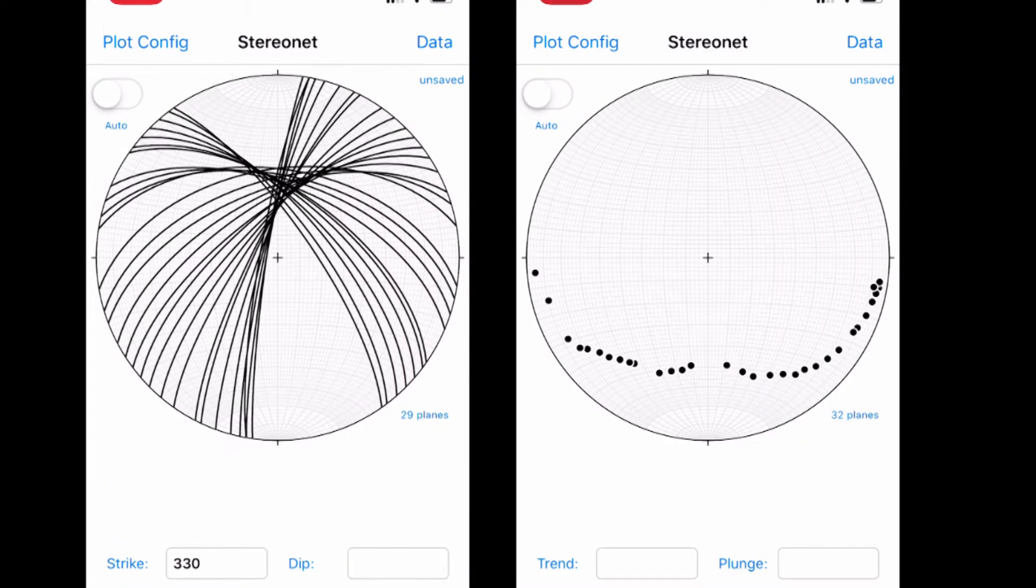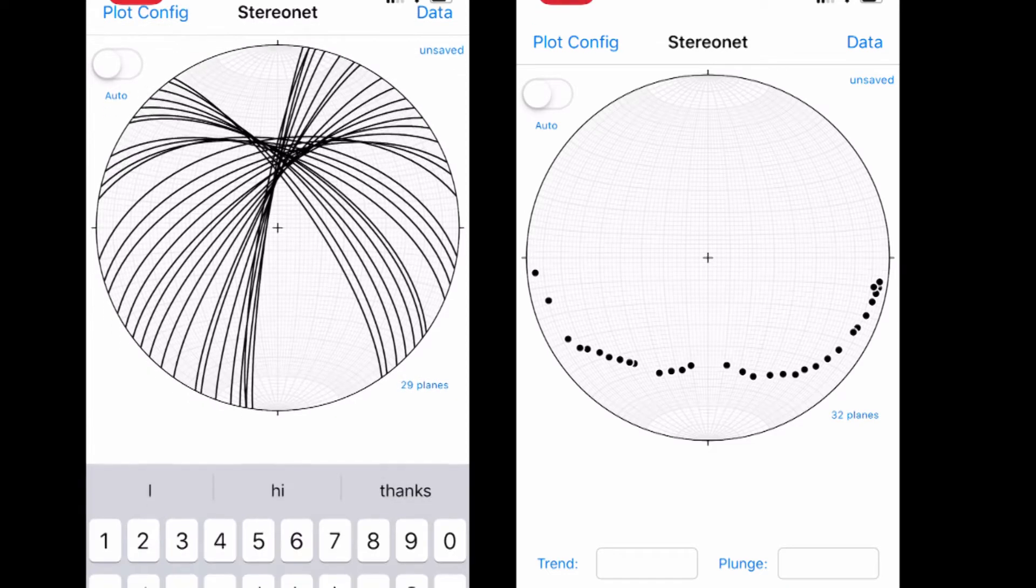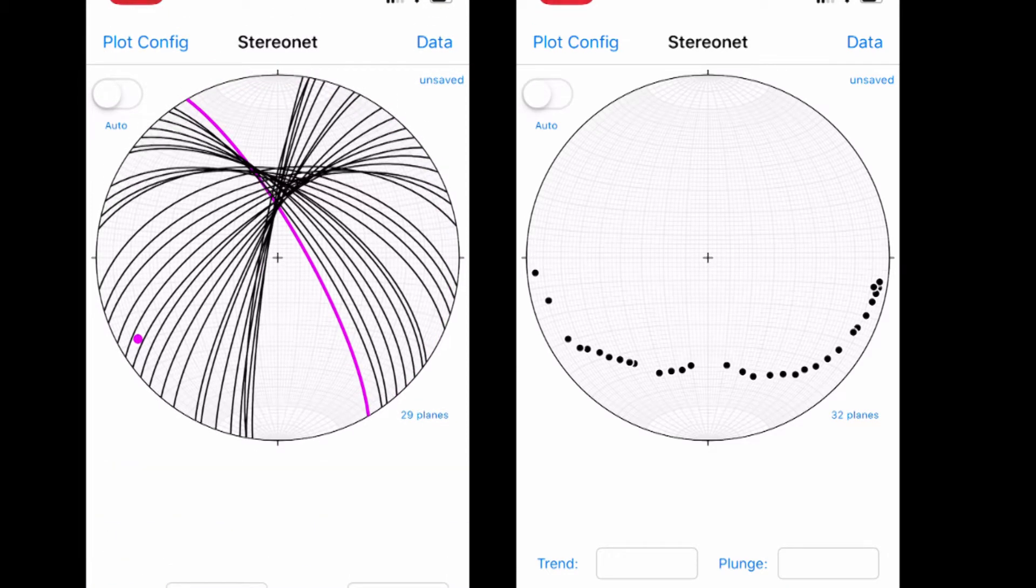In this episode we explore even more neat tricks that can be done by placing your data on a stereonet plot, officially called a stereogram.